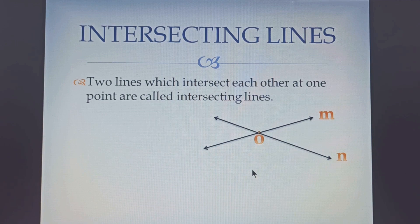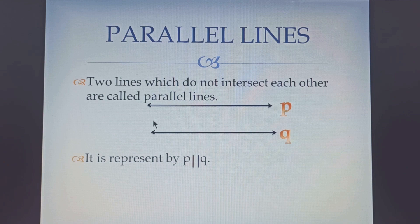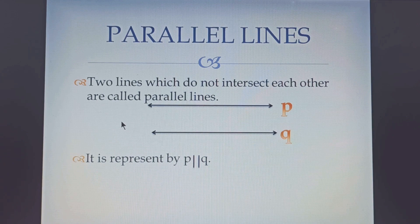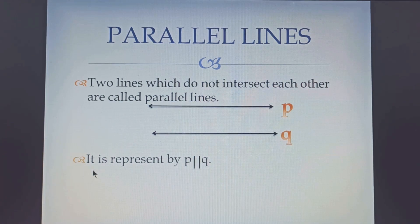Now let us see what parallel lines are. If we have two lines which do not intersect each other — that is, they will not meet each other at any point — then they are called parallel lines. Here two lines have been drawn, line P and line Q, and these two lines are not meeting or crossing each other at any point. If you extend these lines to any length, they will still not meet. So these two lines are parallel lines, represented as P ∥ Q, meaning P is parallel to Q.